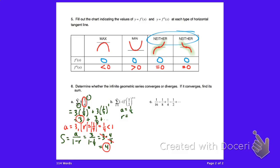When k equals one, we get one-fourth (one-half squared) multiplied by negative one, so the next term is negative one-fourth. That makes the common ratio negative one-half.